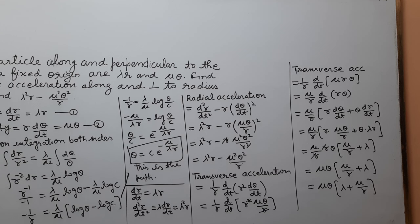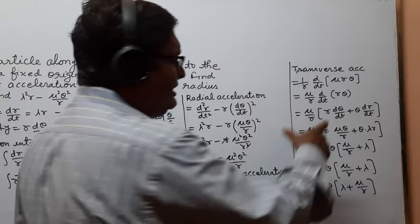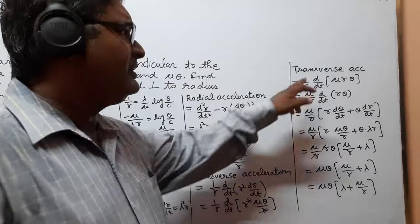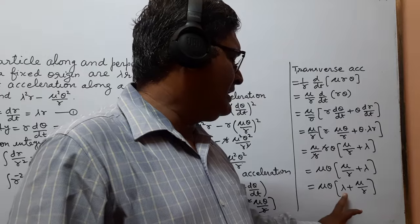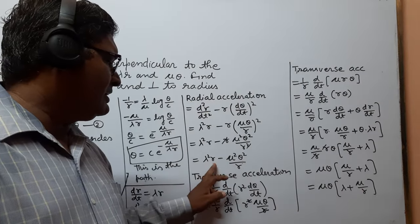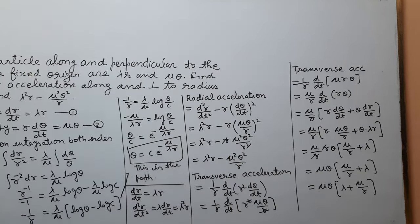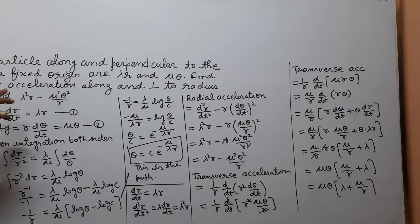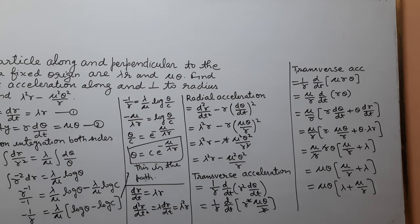The transverse acceleration, perpendicular to the radius vector, is μθ(λ + μ)/r, and the radial acceleration is λ²r − μ²θ²/r. Both results are proved as required. Thank you.